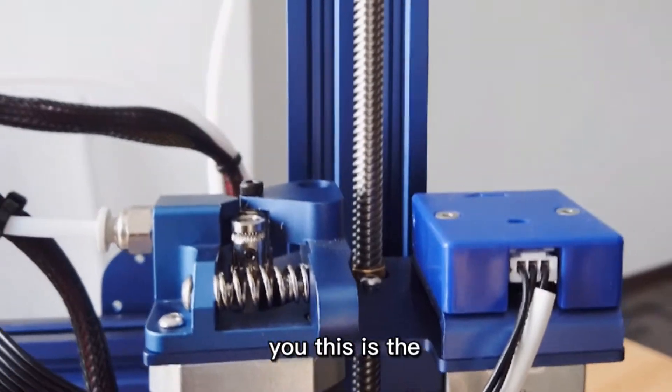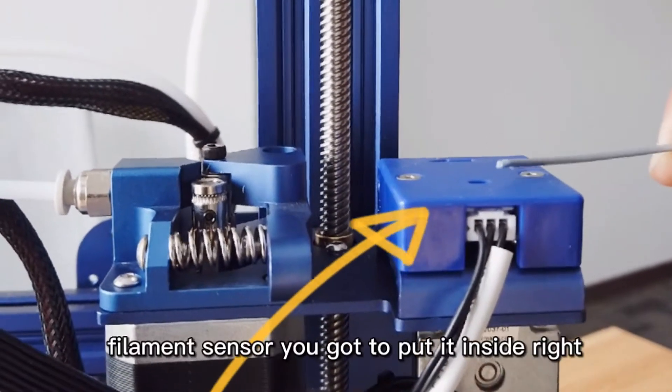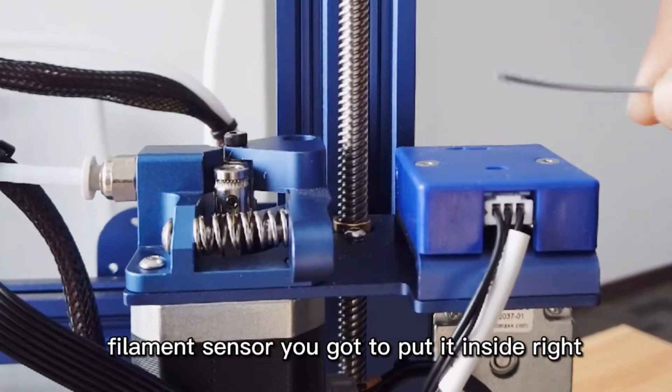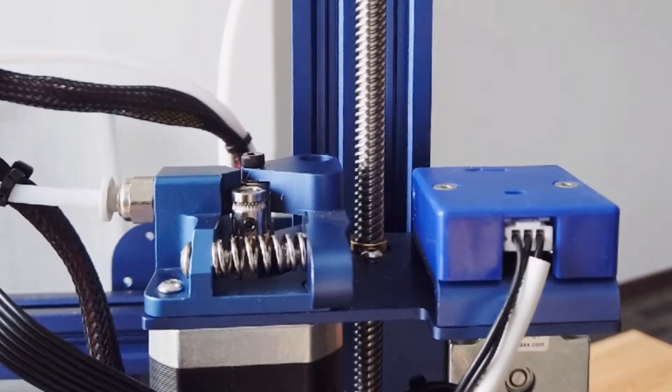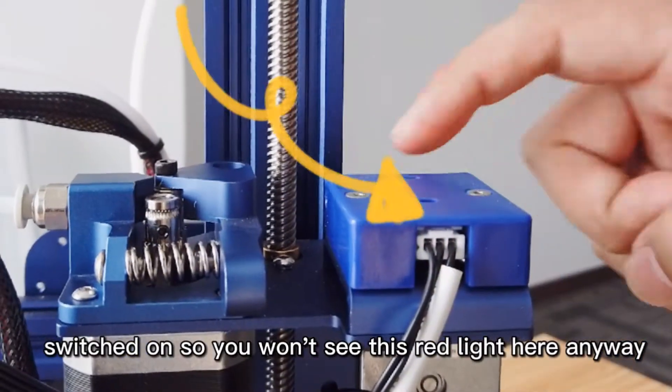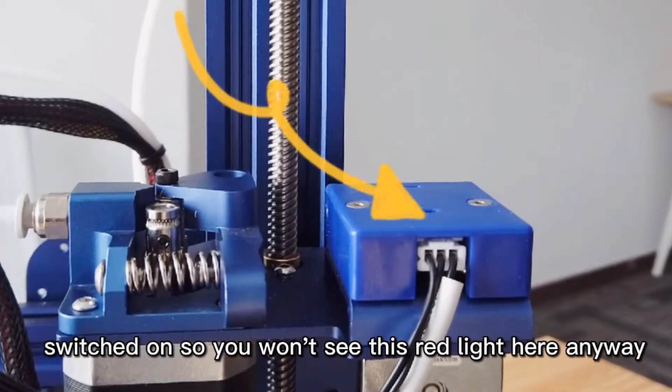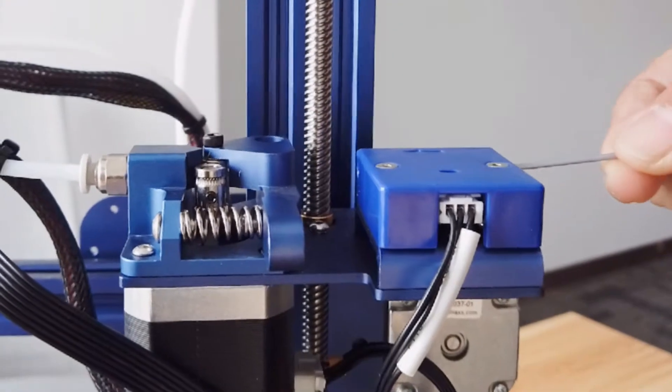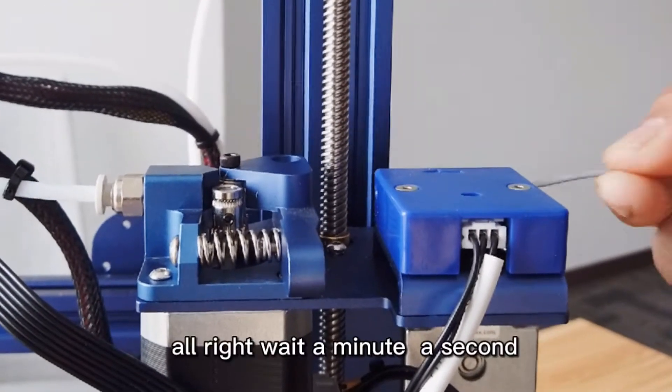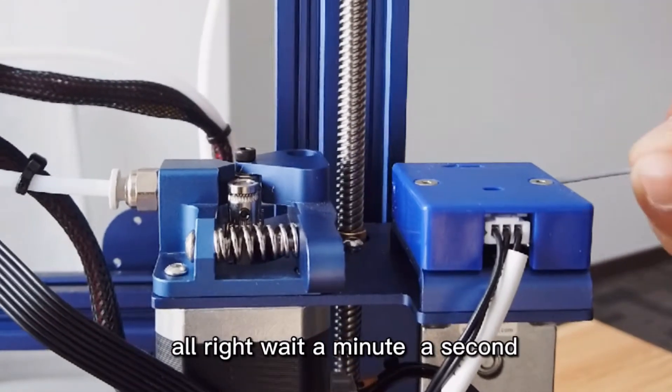This is the filament sensor, you got to put it inside. Right now I don't have this 3D printer switched on, so you won't see these red lights here. Anyway, usually you put it through here. Wait a second.